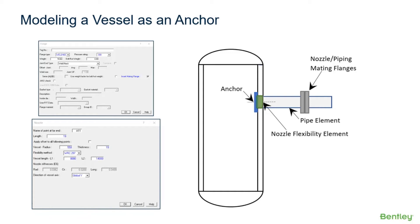The best way to model the nozzle flexibility element is to start it at the outer face of the vessel and end it at the inner face, so the total length will then be the vessel thickness. We can use the nozzle element in AutoPipe to estimate the flexibility of the vessel wall. If we assume a rigid nozzle, this attracts too large reaction forces to this point, and it's too conservative for vessel design.